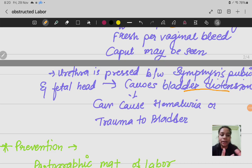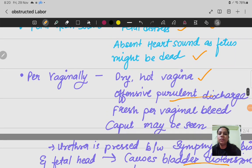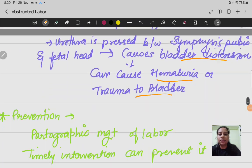Bladder distension because urine is accumulated and the bladder can be traumatized. So these are all the signs and symptoms.